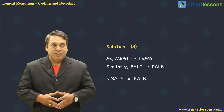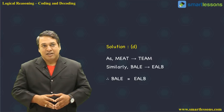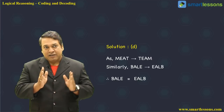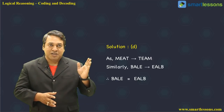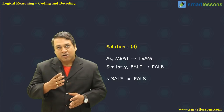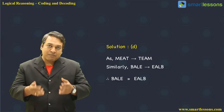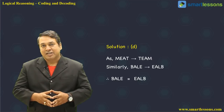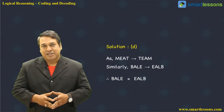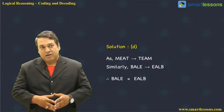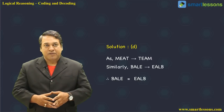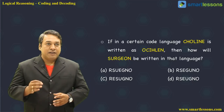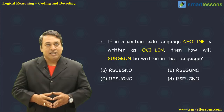In 'meet' (M, E, A, T), the center letters E and A remain the same and the extreme letters are interchanged — so M and T swap, giving T, E, A, M. That is the logical pattern being used. Applying the same logic to 'bail' (B, A, L, E): keep the center letters A and L intact and interchange the extremes B and E. So B becomes E and E becomes B, giving E, A, L, B — which is option B.